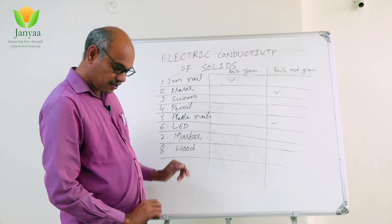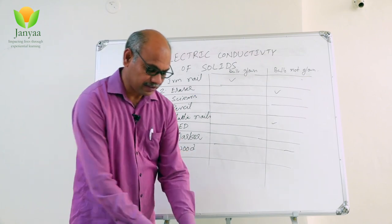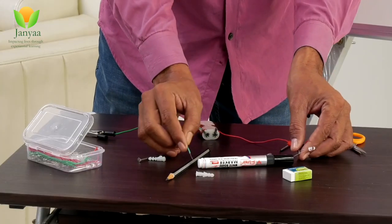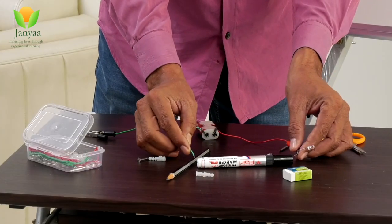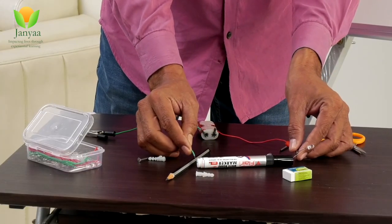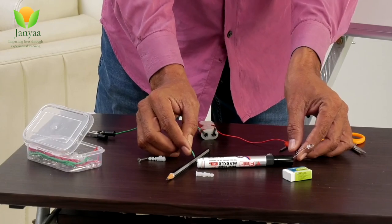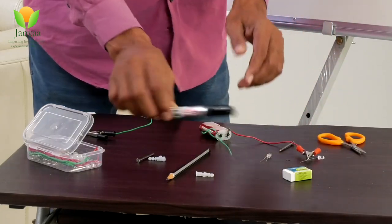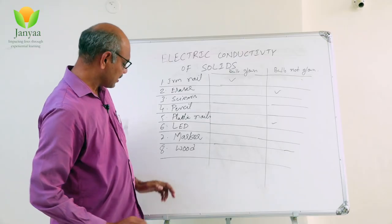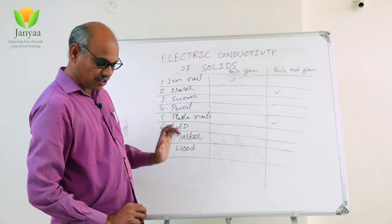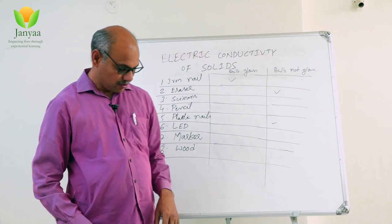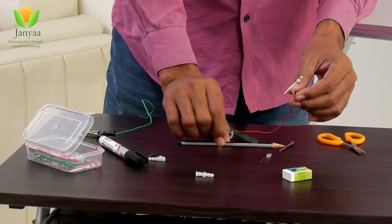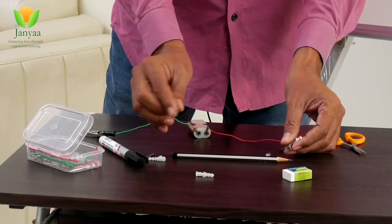Next, let us test the marker. Is the bulb glowing? No — because the marker is made up of plastic, therefore the bulb is not glowing. We already tested for pencil wood as well, and the bulb did not glow there either.